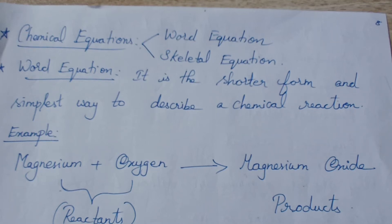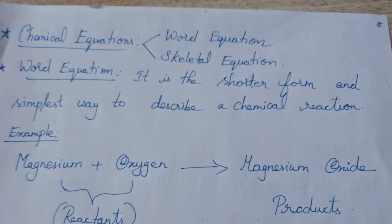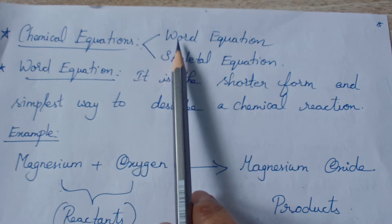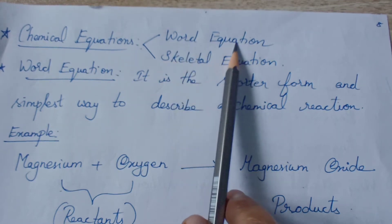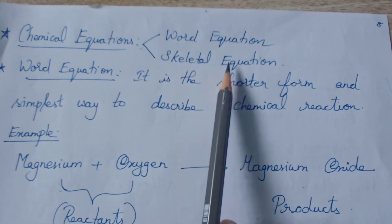Hi dear, we will continue with Layer 1, Chapter 1: Chemical Equations and Reactions. Today we will learn about chemical equations. Instead of describing every reaction in the form of a sentence, we can give it in a shorter form. We can do it in two forms: the word equation and the skeletal equation.